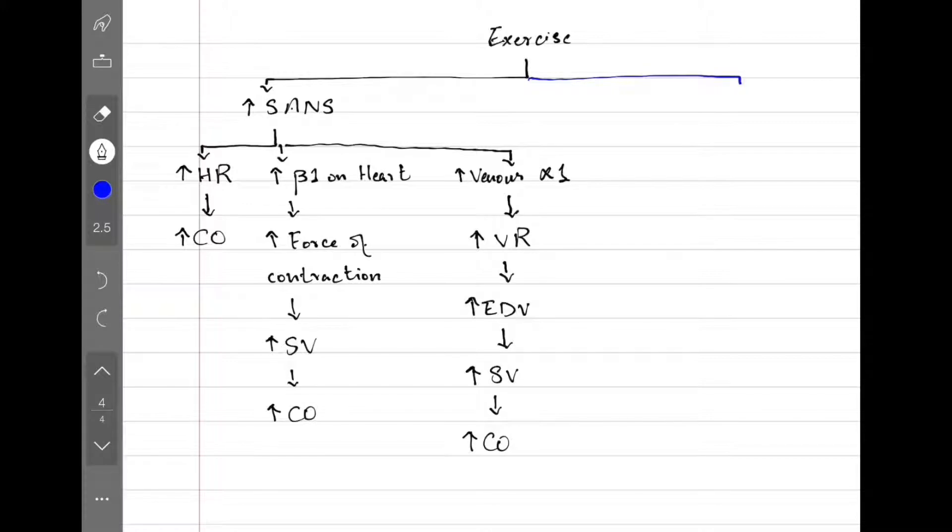The second thing that happens during exercise is activation of the muscle pump. It's just a fancy way of saying veins squeezed by contracting muscles. This gives us increased venous return which gives us increased end-diastolic volume, increased stroke volume, and increased cardiac output. That's how exercise increases cardiac output by increasing the heart rate and the stroke volume.